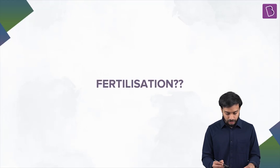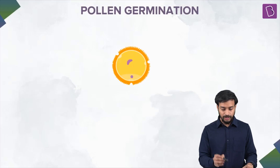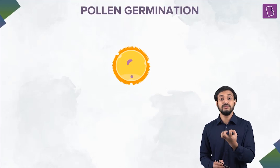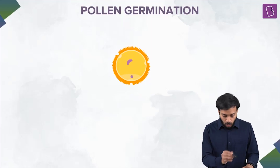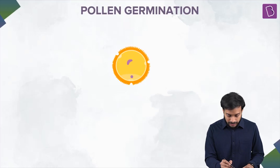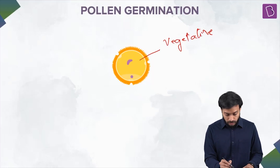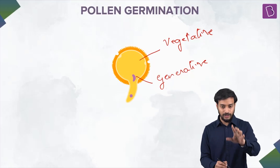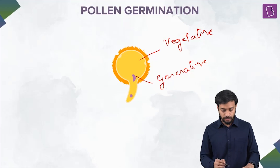Now, fertilization. When these pollen grains are dusted on the stigma, there are some secretions from the stigma — some fluids, a nutritious medium — which is required for the germination of the pollen. At the start, the pollen has two cells: the bigger one is the vegetative cell having the vegetative nucleus, and the smaller one is the generative cell having the generative nucleus.